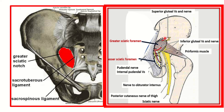In the upper part, above the piriformis, we can see the superior gluteal vessels and nerve. So the superior gluteal nerve and vessels are contents of the greater sciatic foramen.